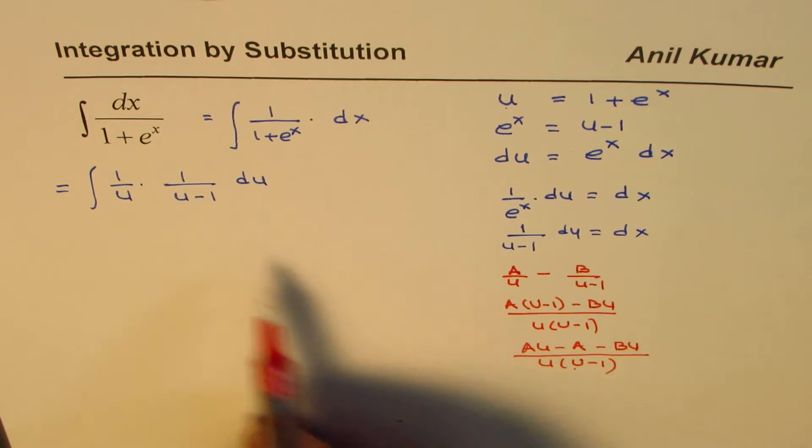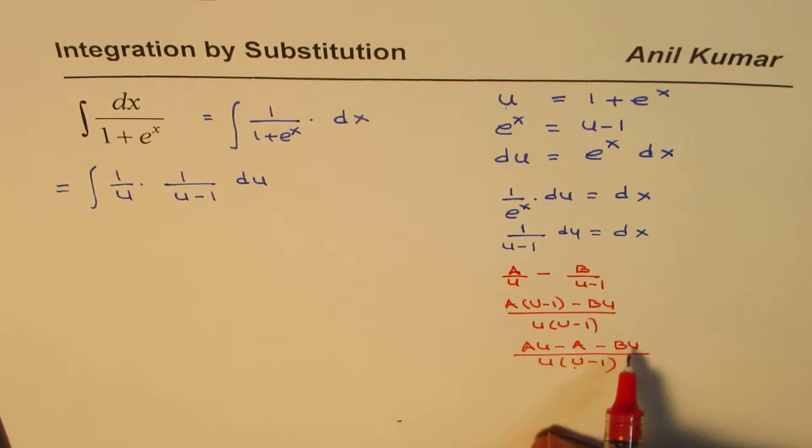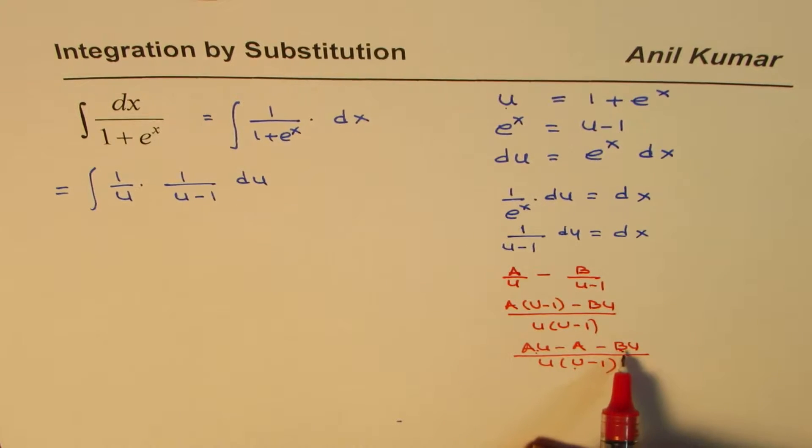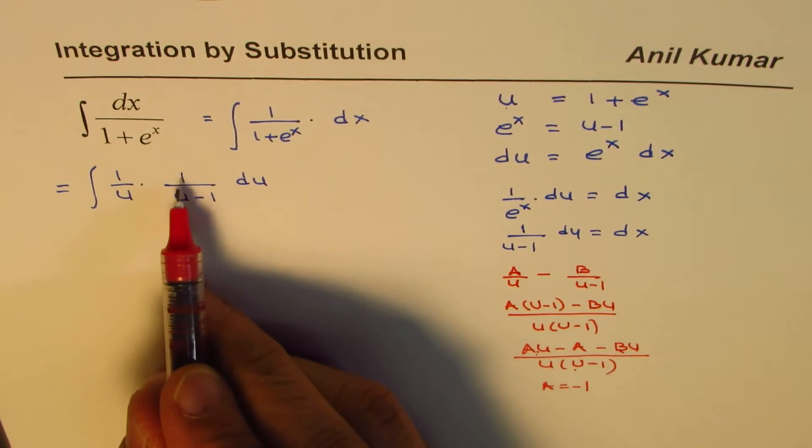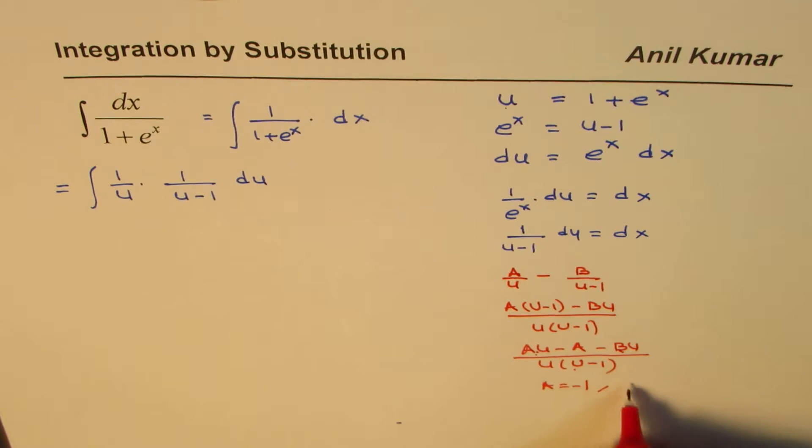What we need, if you compare with this, denominators are same but the numerator should be 1. So we do not need this term, so a and b are kind of conjugates. Plus we need this as positive, so a has to be minus 1, since we need plus 1 here. And if a is minus 1, b has to be plus 1.